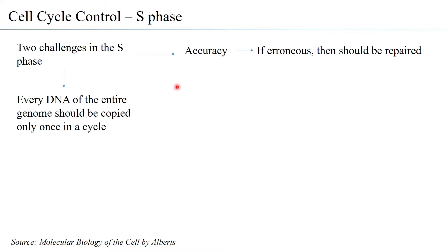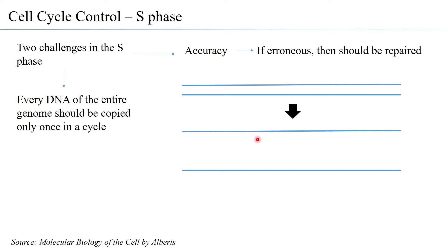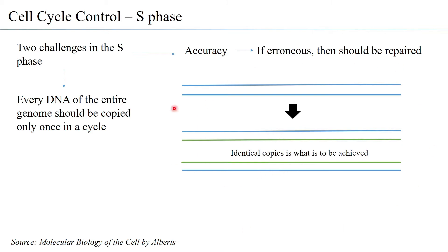For example, consider a DNA that has to be replicated. Both strands of the DNA become templates, and on each template a new DNA strand is formed, giving you two identical copies. This replication happens only once: from one DNA you get two identical copies. It cannot be more than that, otherwise it will lead to polyploidy, and so it must be controlled.